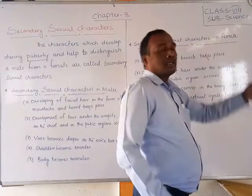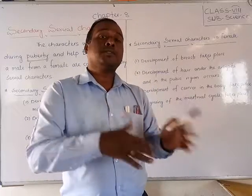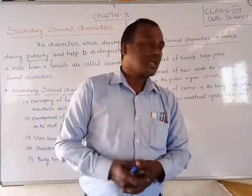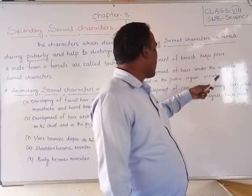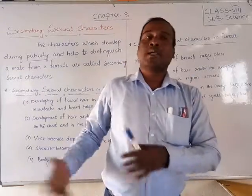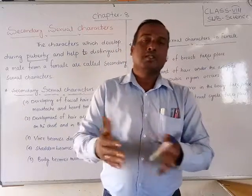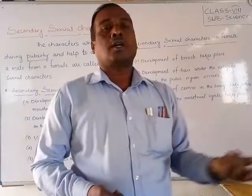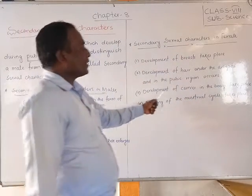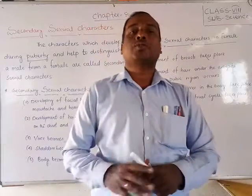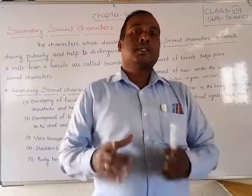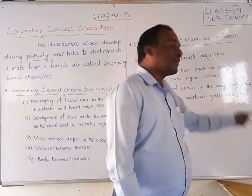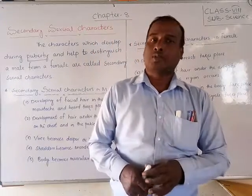Now let us discuss the secondary sexual characters in females. First, the development of breasts takes place — the breasts enlarge and grow. Second, development of hair under the armpits and in the pubic regions — near the vagina — also takes place, just like in boys. Third, the development of curves in the body takes place — the body shape becomes curved, especially at the waist area. Fourth, the beginning of the menstrual cycle takes place.